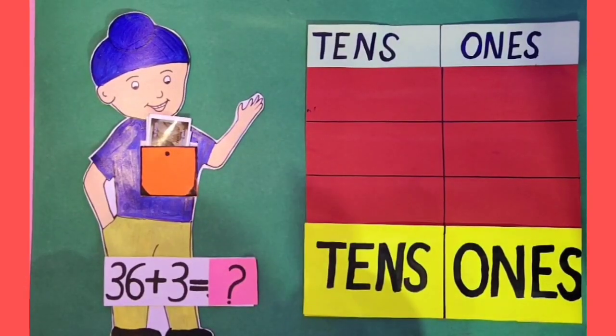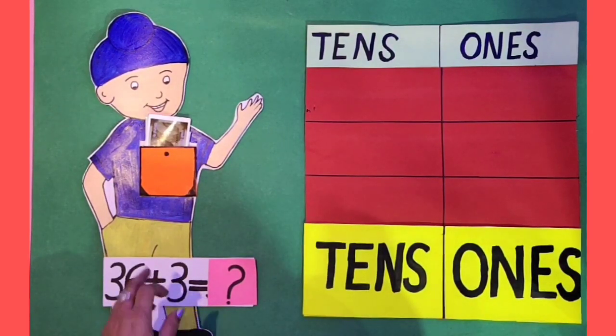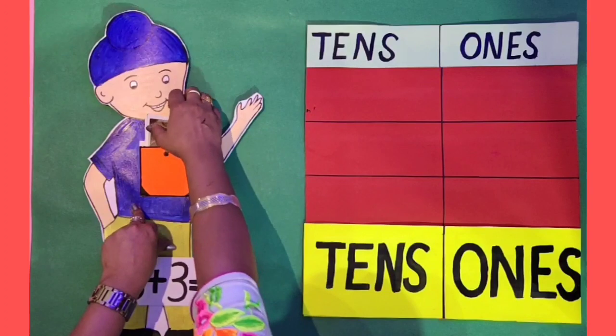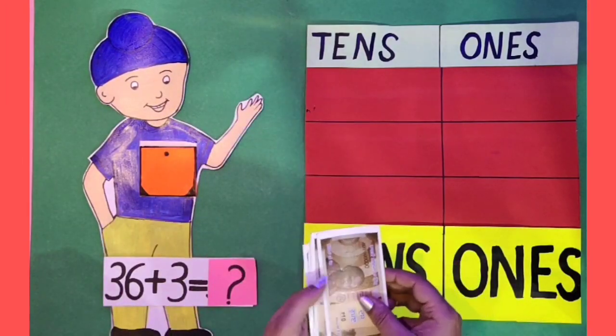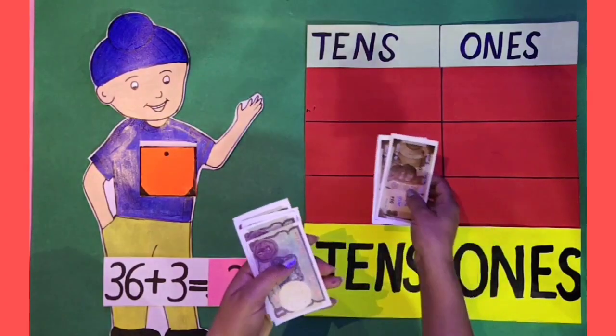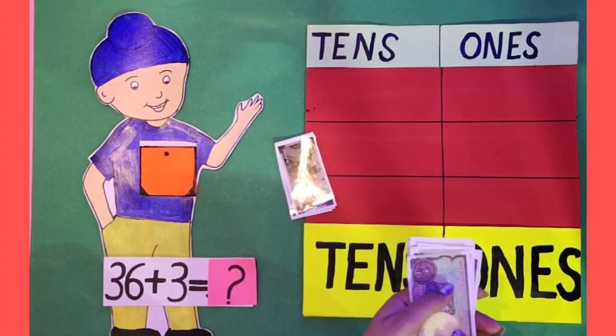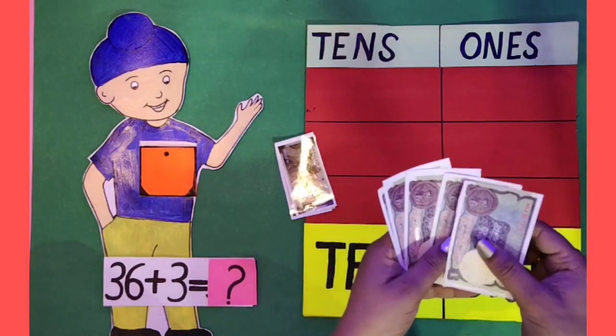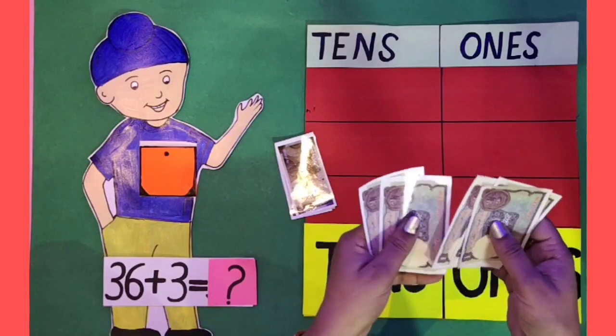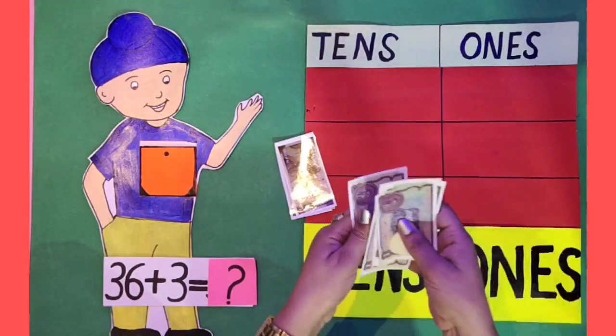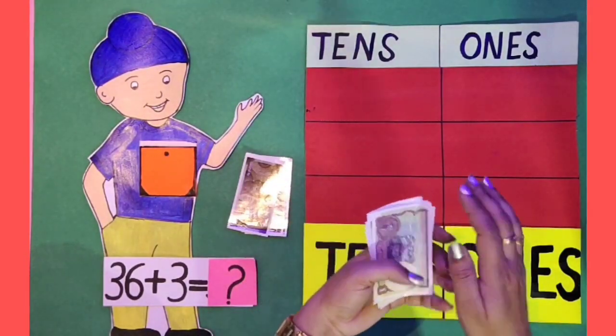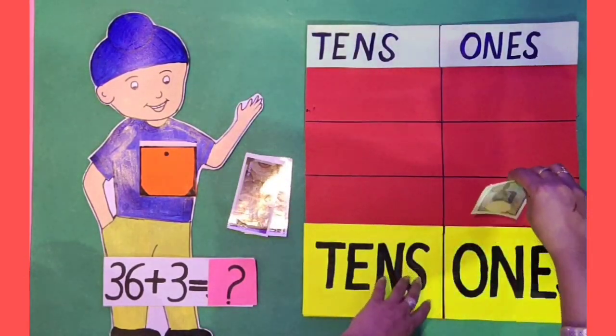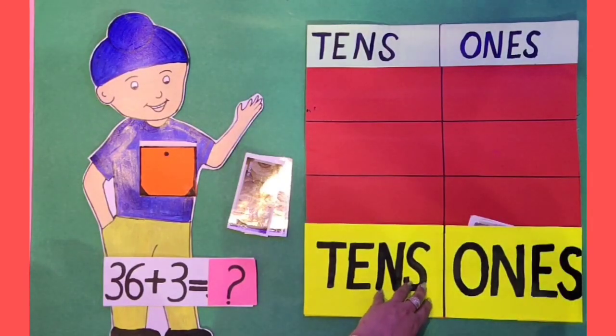Now, let's solve this sum with another method. We already know Sukhman has 36 rupees with him. Let's count 1 rupee notes separately. 1, 2, 3, 4, 5 and 6. That means 6 ones.